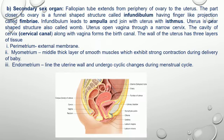The fallopian tube extends from the periphery of the ovary to the uterus. The part closer to the ovary is a funnel-shaped structure called the infundibulum, having finger-like projections called fimbriae. The infundibulum leads to the ampulla, which joins with the uterus via the isthmus. The uterus is a pear-shaped structure, also called the womb.